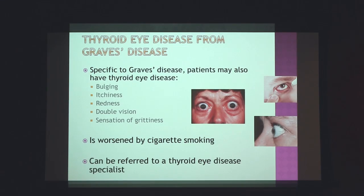Graves' eye disease is only specific to this form of hyperthyroidism. Some of the symptoms include bulging, itchiness, and other eye irritation. Importantly, this is worsened by cigarette smoking, so I counsel patients with Graves' eye disease to stop or significantly decrease smoking. In severe or even milder forms, I would recommend referral to specialists at the UCLA Stein Eye Institute who specialize specifically in thyroid eye disease.